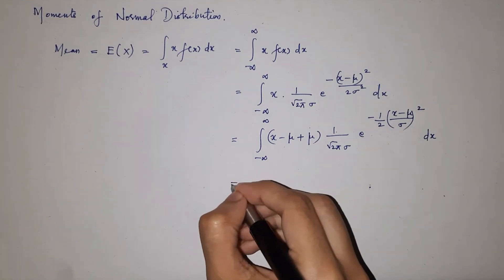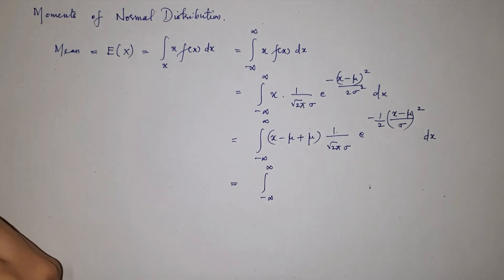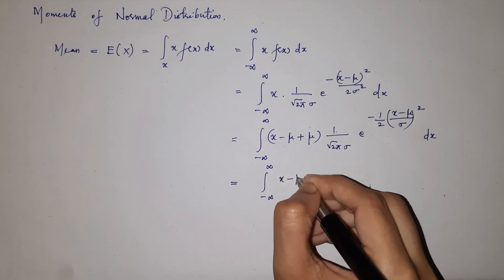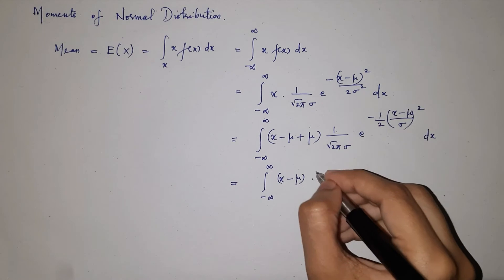This is equal to integral minus infinity to plus infinity x minus mu into—I can write it as f of x itself, right